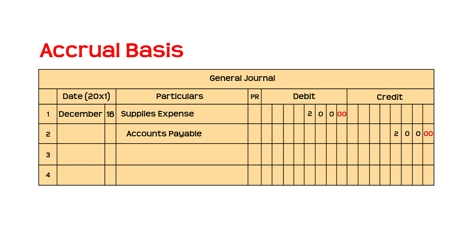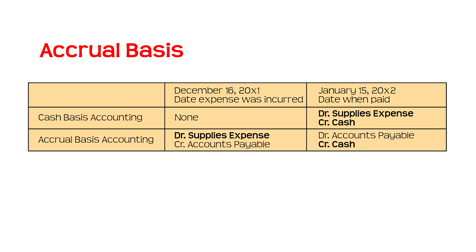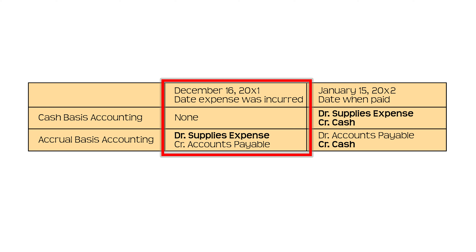Even if you haven't paid any cash, you still have to record an entry because you have actually incurred an expense. Aside from recognizing the expense, you also acknowledge that you owe your supplier for the supplies not yet paid. Another entry is made on January 25, 20x2 when you paid the supplies: debit accounts payable and credit cash. Accounts payable is debited to recognize that payment has been made and that you no longer owe your supplier. Notice that in both instances, there was no impact on the cash account on the day of the purchase. What is crucial was the recording of revenue and expense, as well as the recognition of a receivable or payable on the date of the accountable transaction.